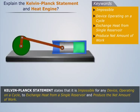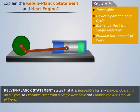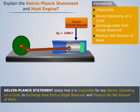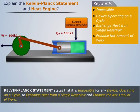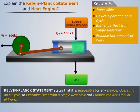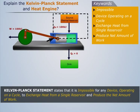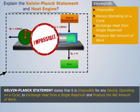Consider a piston-cylinder arrangement which receives heat of 100 kJ from a thermal reservoir and produces a net work of 100 kJ, thus not rejecting any heat. But such an arrangement is impossible, as it violates the Kelvin-Planck statement.